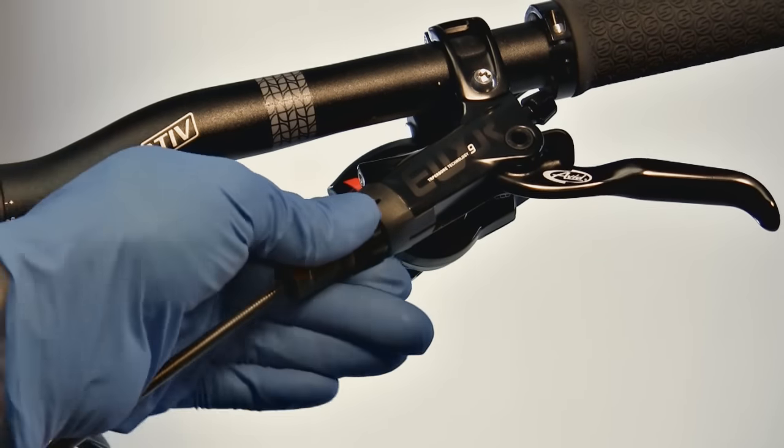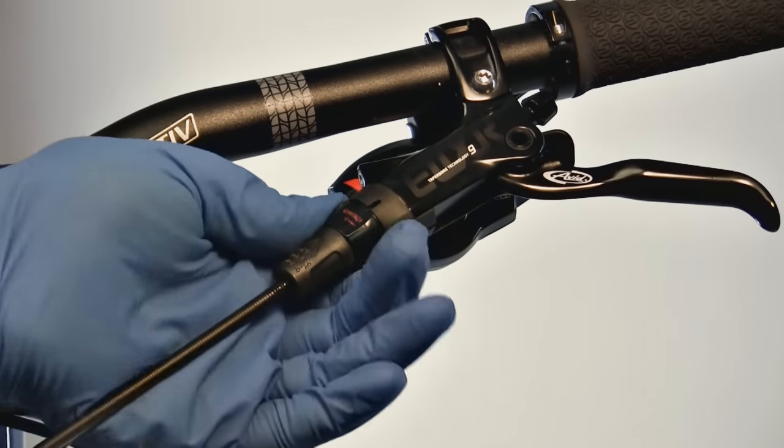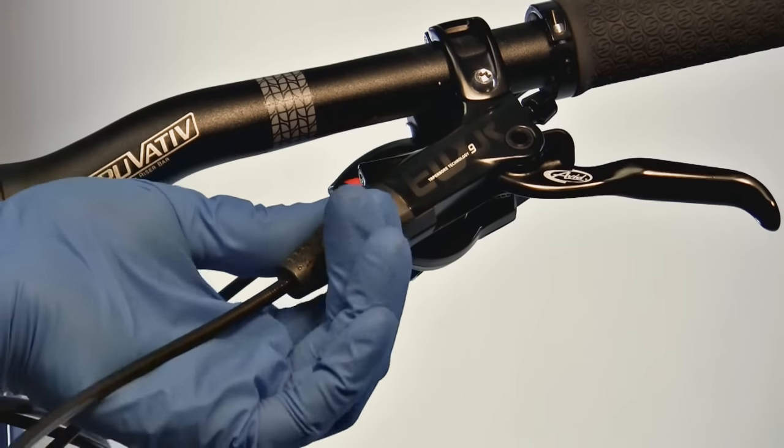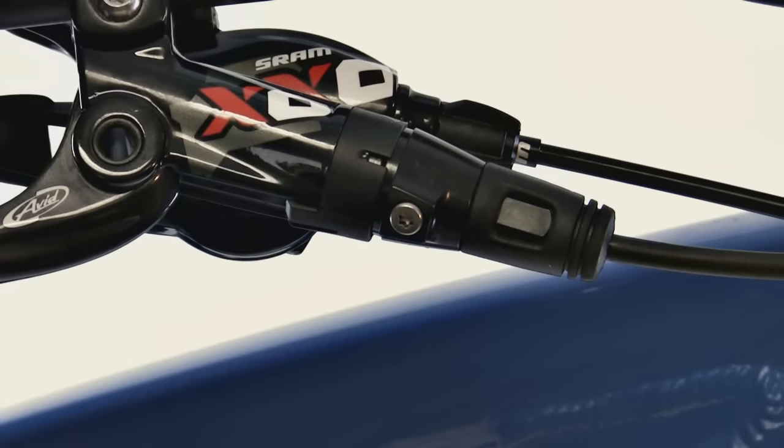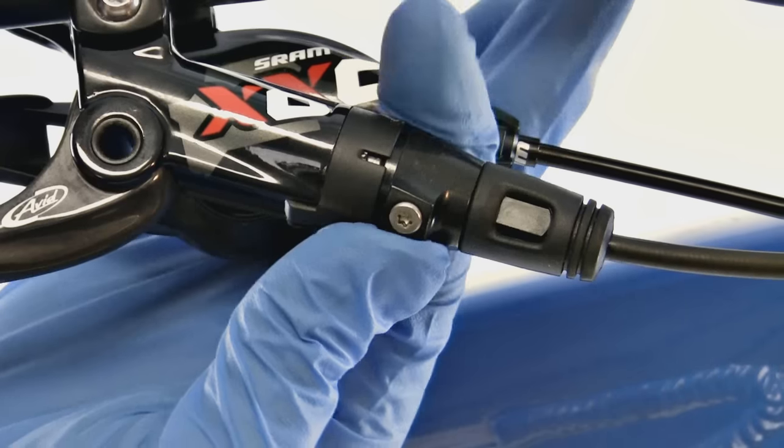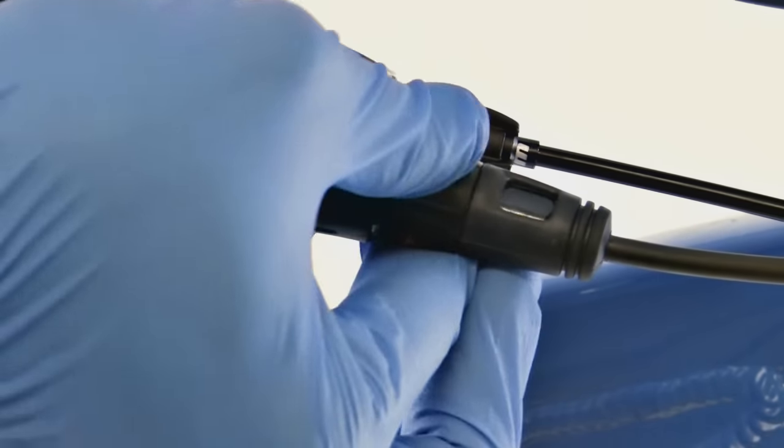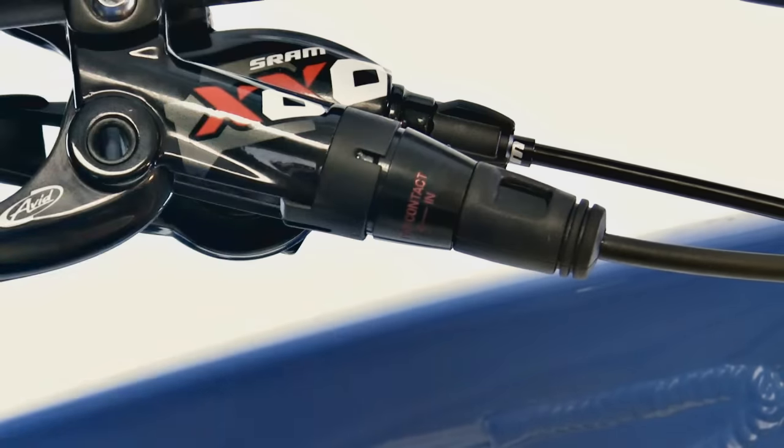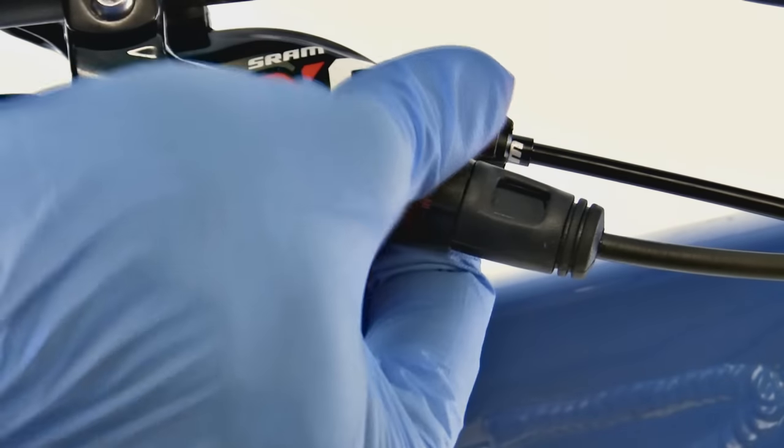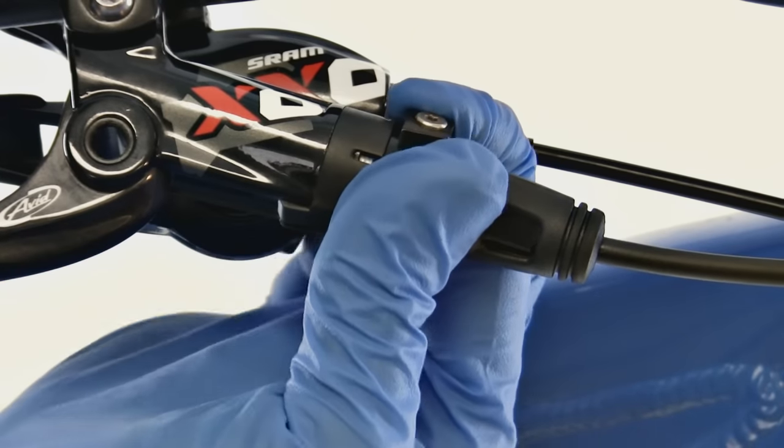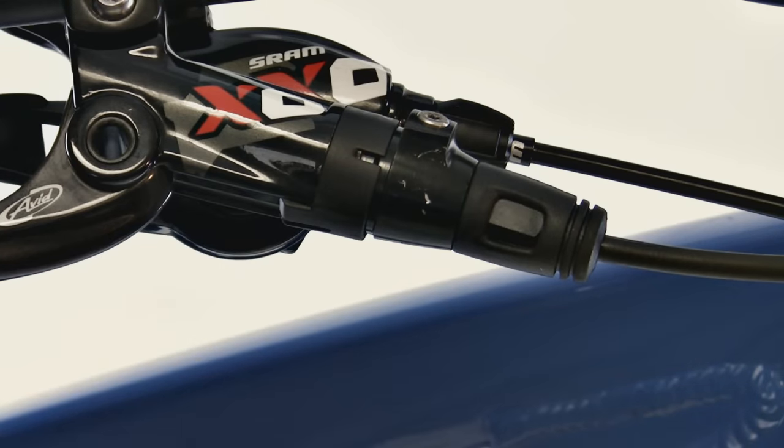For models with pad contact adjust and a fixed bleed port screw, rotate the adjuster in the direction opposite the arrow until it stops. For models with pad contact adjust and a bleed port screw located on the pad contact adjuster, rotate the adjuster in the direction opposite the arrow until it stops. Then rotate the adjuster back just enough to place the bleed screw at its highest point.